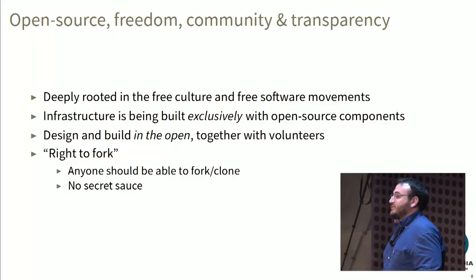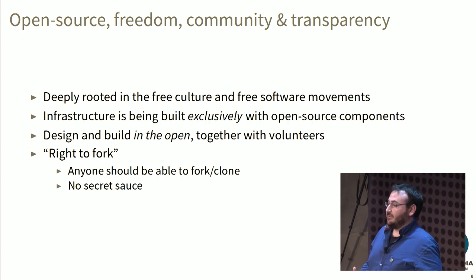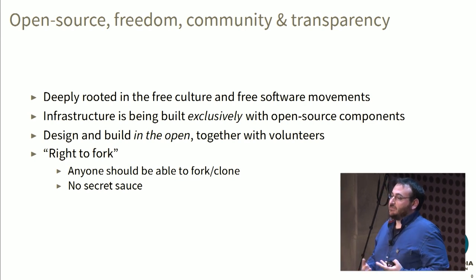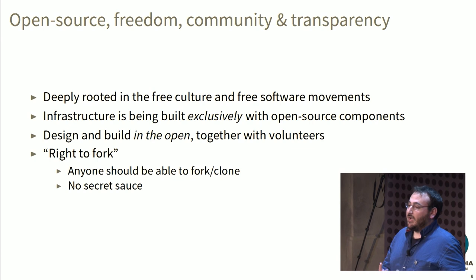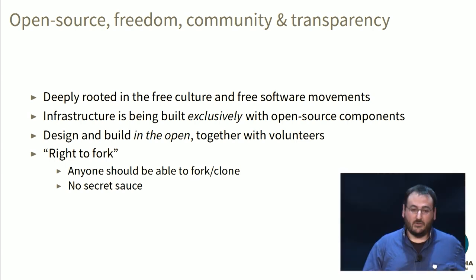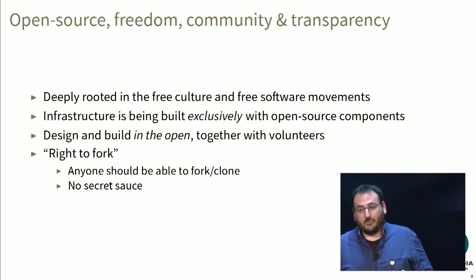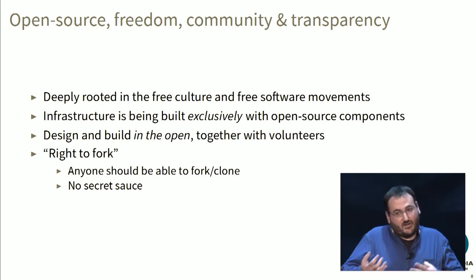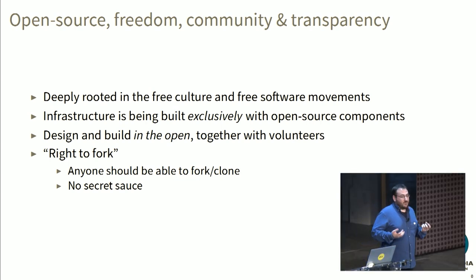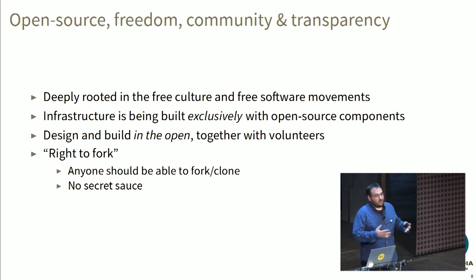Our second principle is one of open source, freedom, community, and transparency. The Wikimedia movement is deeply rooted in the free culture and free software movements. We were born out of it, so our infrastructure is built exclusively using open source components. We design and build in the open with volunteers together — not as us versus the community. Everything is open for everyone to contribute. As a free culture project, we have a fundamental property: the right to fork. If the Wikimedia Foundation goes evil one day, everyone should be able to fork the projects and start a new Wikipedia, Wikiversity, or other project.